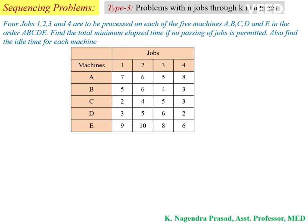Also find the idle time for each machine. Here, the number of jobs is 4, which is more than 2 jobs — let us consider N number of jobs. And the number of machines is 5, which is more than 2 machines — let us consider K number of machines.